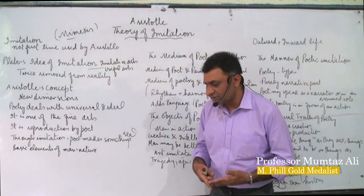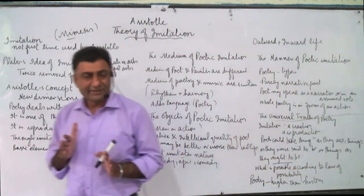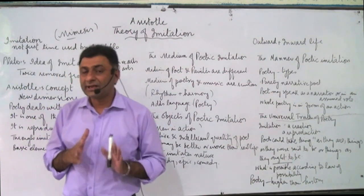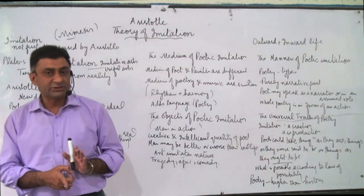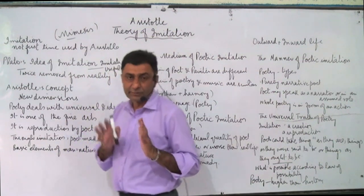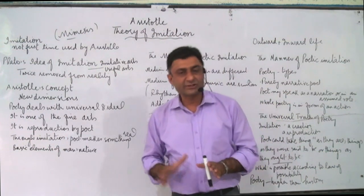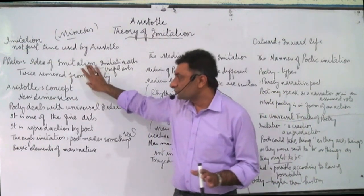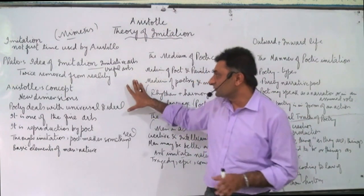Plato gave the example of a carpenter. When a carpenter makes anything, the very first thing is the idea in his mind — that is real. The thing he makes is the second reality. And if a poet writes about that thing, it is the third reality. So the poet's reality is twice removed from reality — it is a copy of a copy, a shadow of a shadow, an imitation of an imitation.